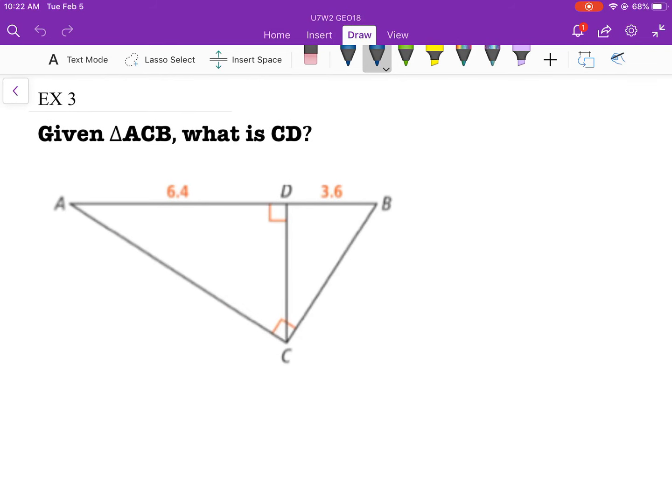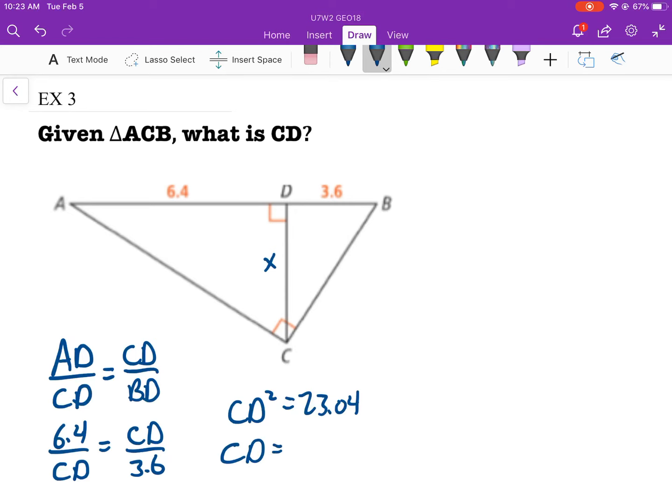All right, example 3. So given triangle ACB, what is CD? What is CD? So we're trying to find this guy. We know that we have a big triangle that we can use. We have the little triangle that we can use. So we can say that AD over CD is equal to CD over BD. So we have 6.4 over CD is equal to CD over 3.6. And CD is equal to 4.8.